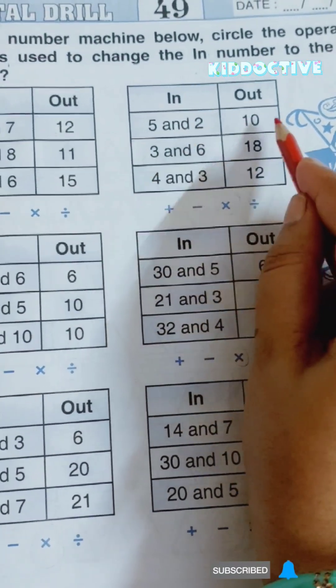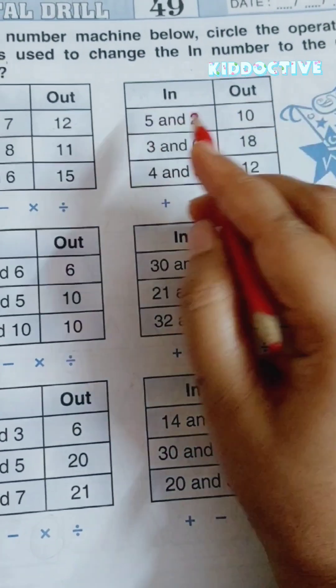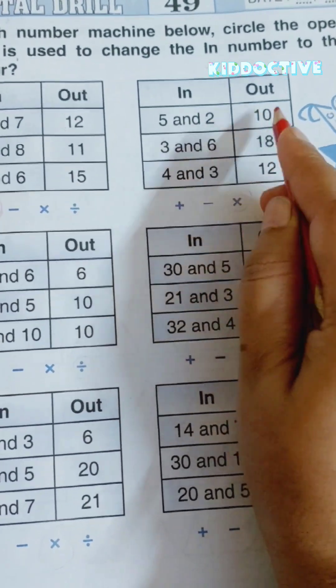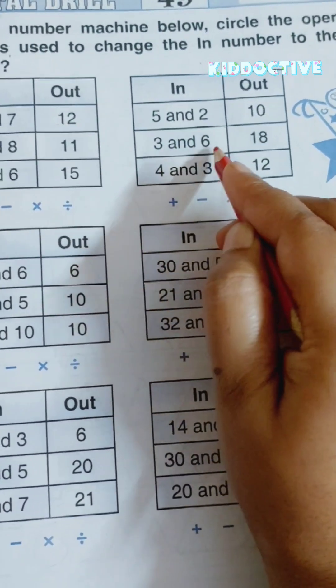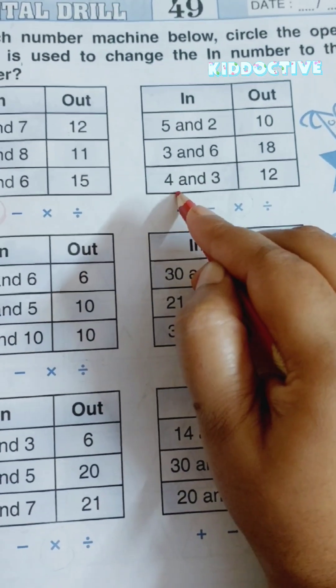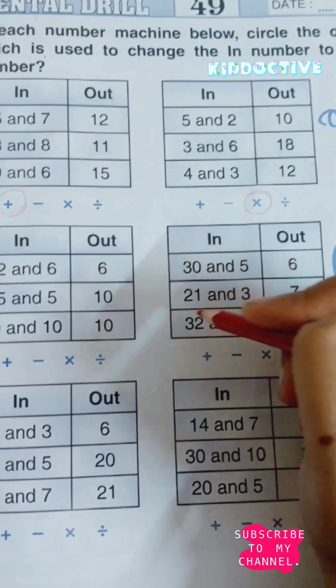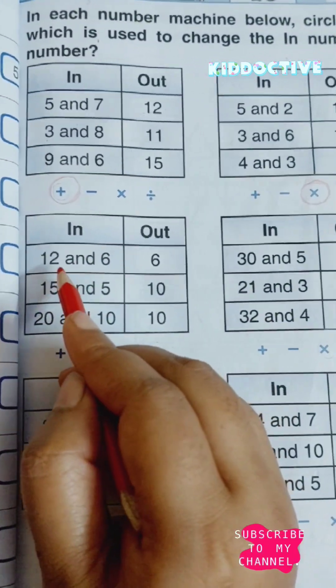Now here, 5 and 2, 10. When will that happen? Yes, multiplication. 5 multiplied by 2 is 10. 3 multiplied by 6 is 18. 4 multiplied by 3 is 12. So the operation here is multiplication.